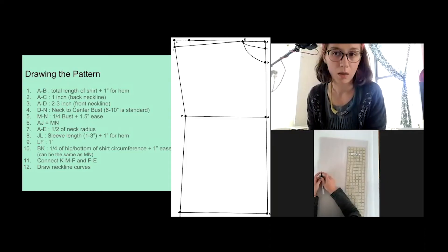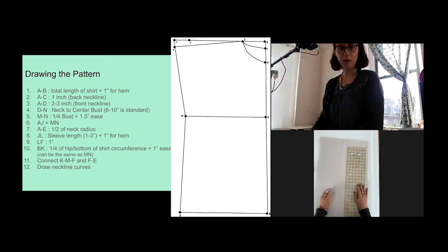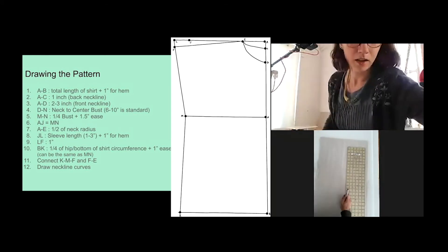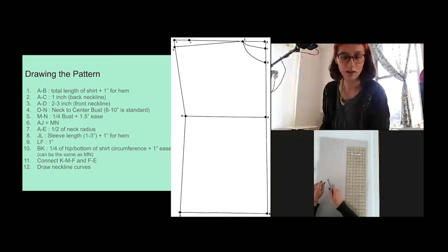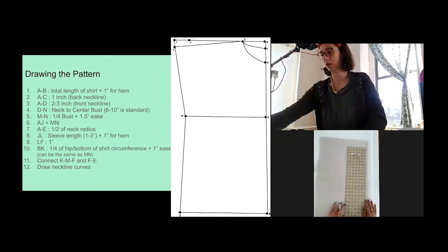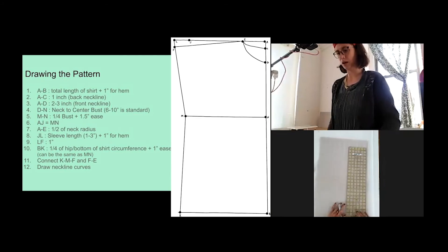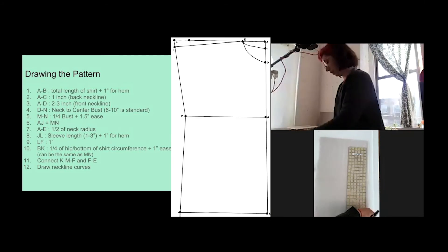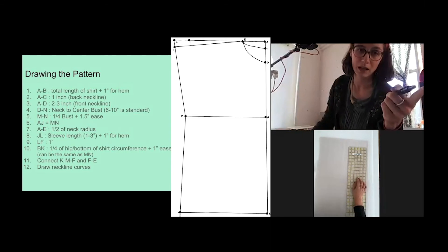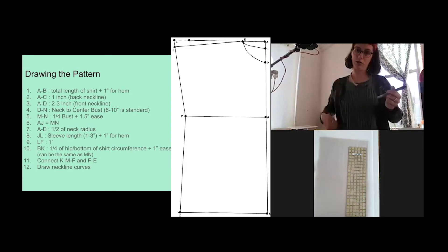Okay, so we're going to label these points as we go. I have my paper ready, I have my ruler, I have my marker, and I have my measurements written down right here, ready for reference. The first thing I'm going to do is draw a vertical line along the right edge of my paper, relatively close to the edge. This vertical line is going to be AB, which is the total length of the shirt plus one inch for the hem. So that was the measurement that you took from your shoulder down to the bottom. I'm going to mark A at the top and then B at the bottom.